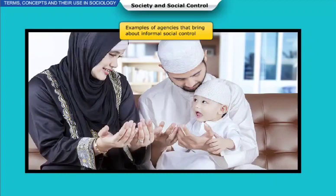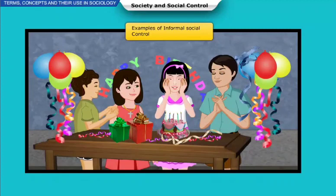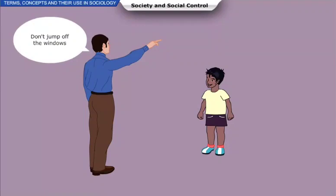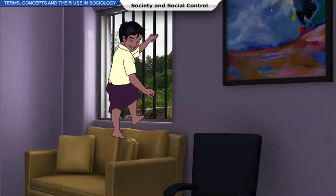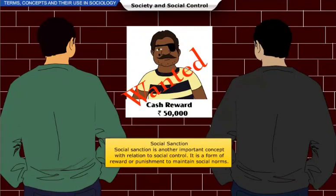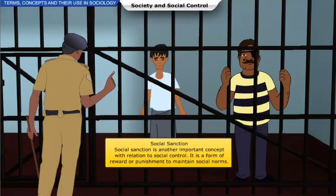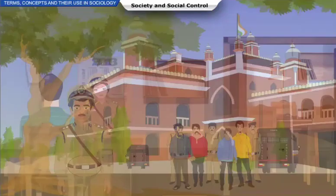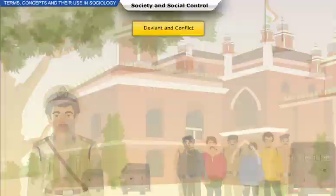An example of informal social control can be the negative or positive reactions of people or even their body language. It is important to understand that informal social control is not always morally and ethically correct, neither does it guarantee complete submission. Social sanction is another important concept related to social control — it is a form of reward or punishment to maintain social norms. A social reward leads to positive social control, whereas a punishment leads to negative social control, which is used to prevent deviant behavior.